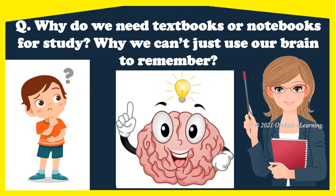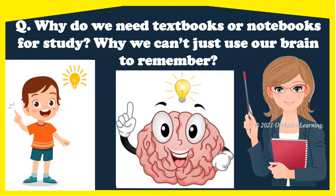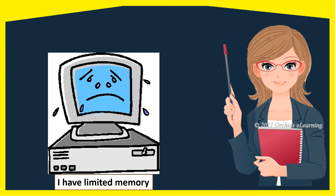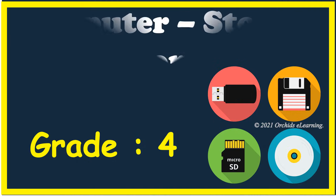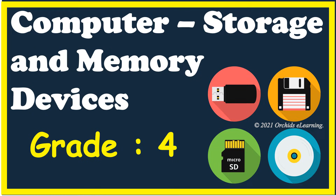Why do we need textbooks or notebooks for study? Why can't we just use our brain to remember? Because we can't remember each and everything — we may forget some things. So our books help us to revise. Similarly, a computer also has limited memory capacity like us, so it needs some extra storage and memory devices to store a large amount of data. Let us learn more about computer storage and memory devices today.